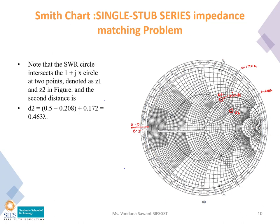Draw the line passing from the center through Z2 and out of the graph. This line will intersect the wavelength circle at 0.172 lambda — so 0.172 lambda is the wavelength at Z2.